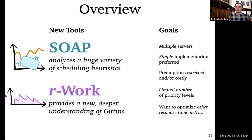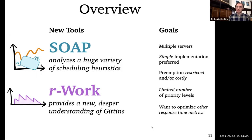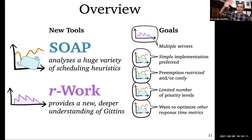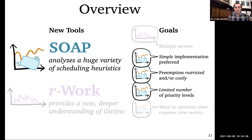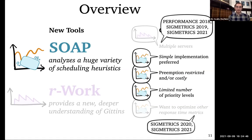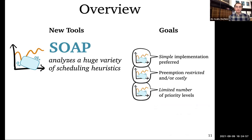Another new tool I've developed, which I won't talk much about today, is something called our work, which provides a new way of understanding multiple-server settings. I've applied SOAP to most of these problems. For the rest of today, I'll focus on three: having a simple scheduling policy, handling restricted preemption, and having a limited number of priority levels.